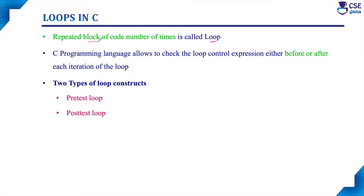Loops are nothing but a repeated block of code executed a number of times. When the loop control expression is evaluated to true, the block of code will execute repeatedly until the loop control expression is evaluated to false. Whenever the expression is true, the block of code executes once, then the expression is evaluated again. This process repeats until the loop control expression is false, at which point the loop will terminate.